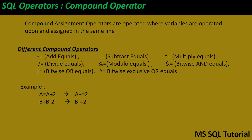There are different compound operators available. If you see on my screen: add-equals (+=), subtract-equals (-=), multiply-equals (*=), divide-equals (/=), modulo-equals (%=), bitwise-AND-equals (&=), bitwise-OR-equals (|=), and finally bitwise-exclusive-OR-equals (^=). These are all the different compound operators we have. Let me explain them one by one.